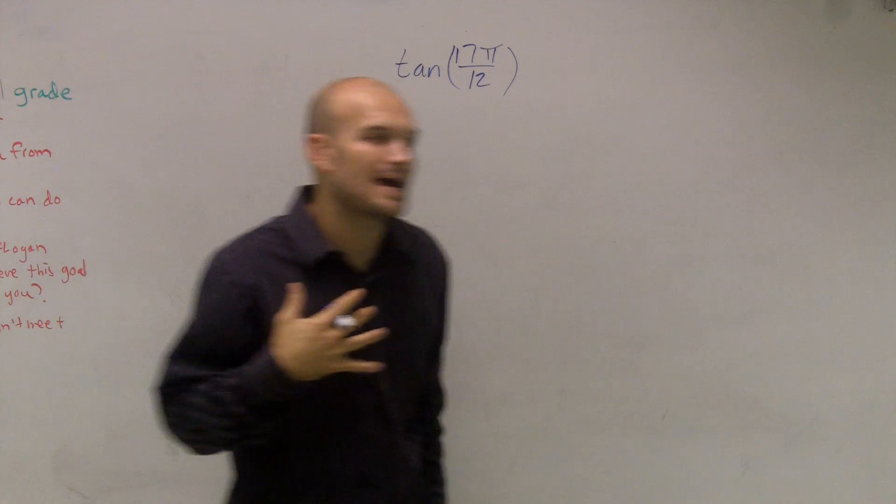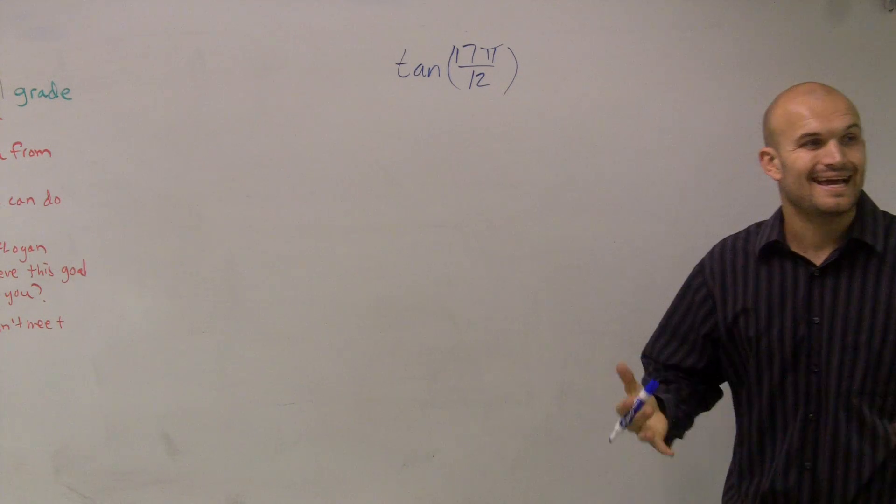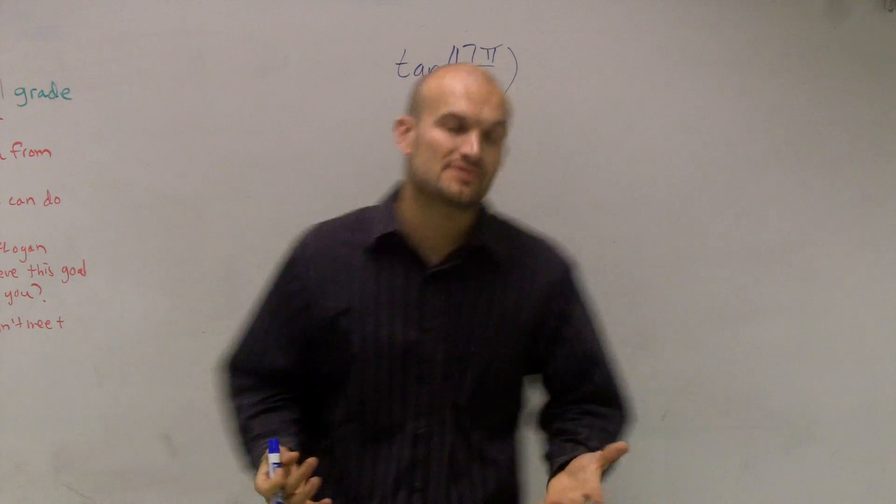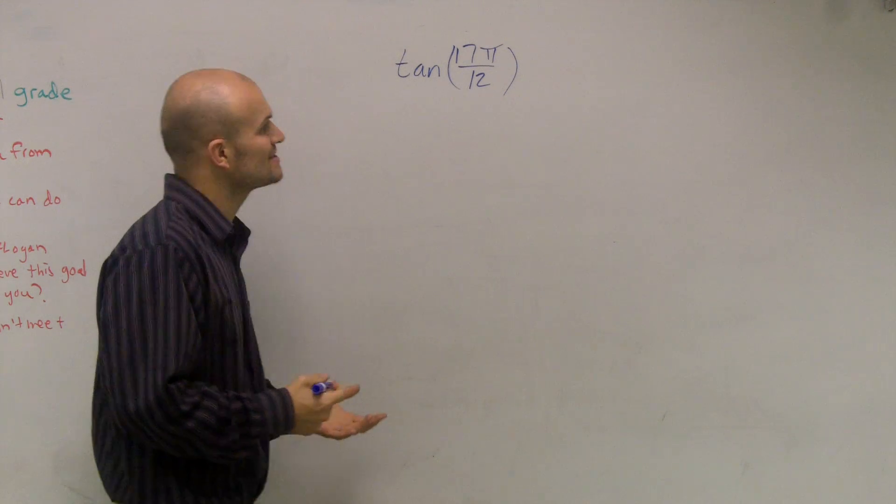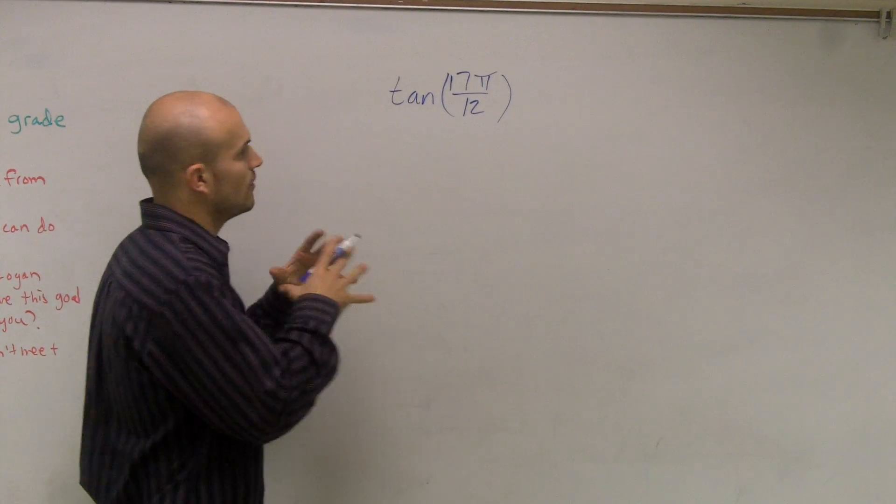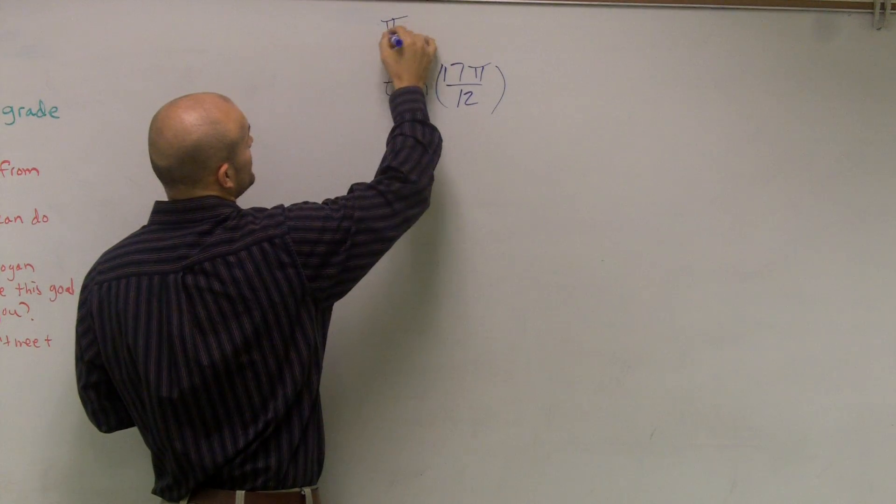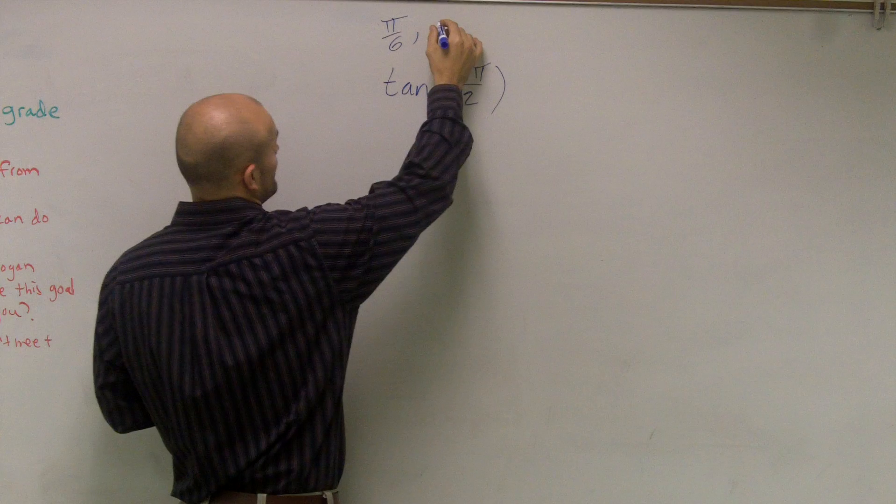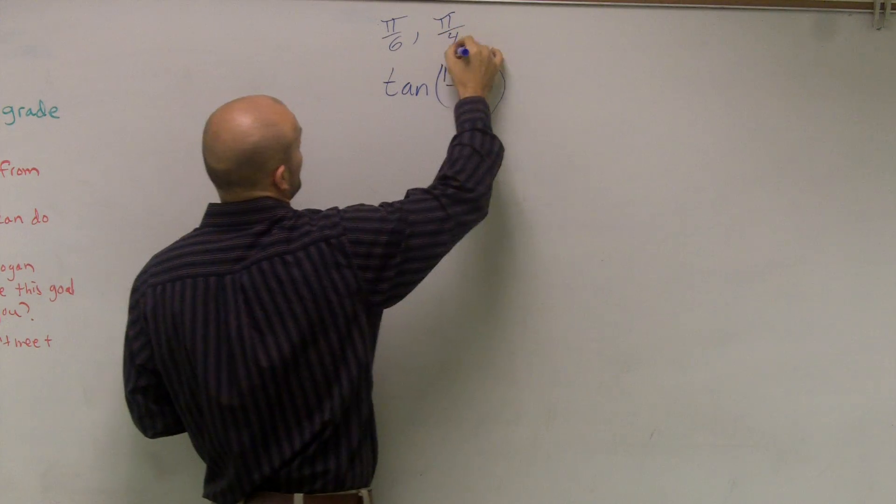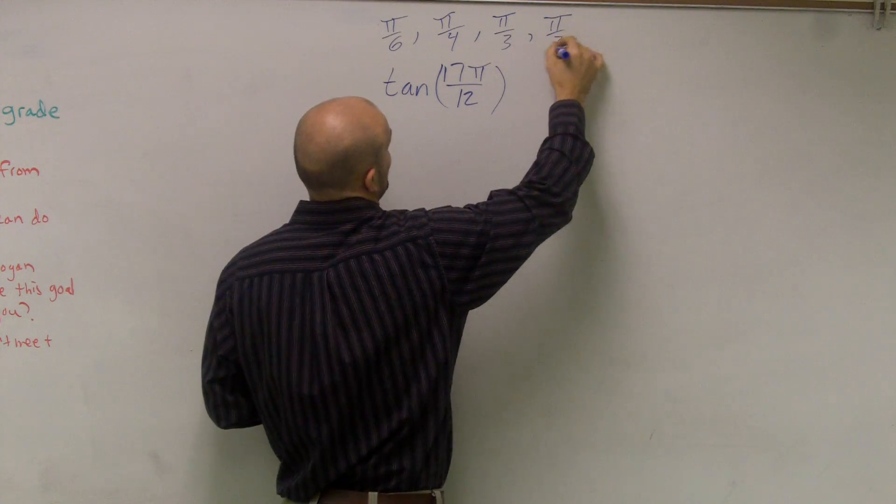Because now what we've got to do is we've got to determine how am I going to split up tangent of 17π over 12 into two different angles that I can use to find the values on a unit circle. One thing you've got to remember is all the points that we know on our unit circle can either be broken up into multiples of π/6, π/4, π/3, and π/2.